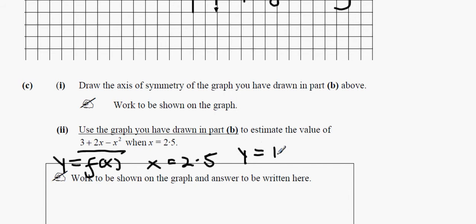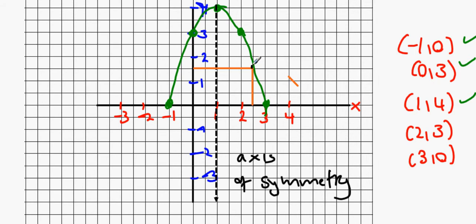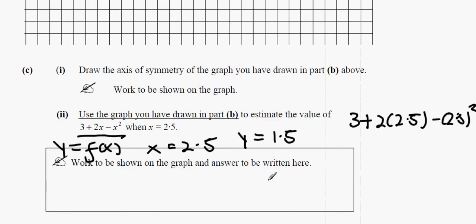Now, to check your answer, you could just replace x with 2.5 in the equation: 3 plus 2 times 2.5 minus 2.5 squared, which gives roughly 1.75. So just be careful of any errors — maybe around 1.6 would have been a better answer. I'd say 1.6 is a better answer than 1.5. Just make sure your drawing is nice and accurate.